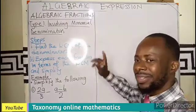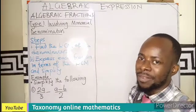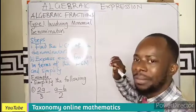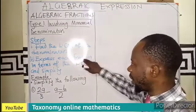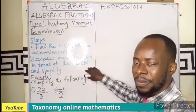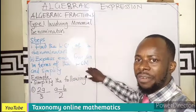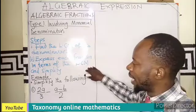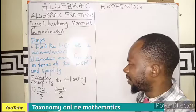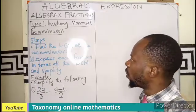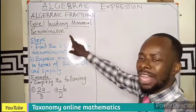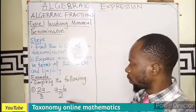we first of all find the LCM of the denominators. If there are four terms, five terms, we find their LCM. Then two, we express each of the fractions in terms of the LCM, then we simplify. That is the two simple steps we can follow when we are having algebraic fractions involving monomial as what? Denominator.